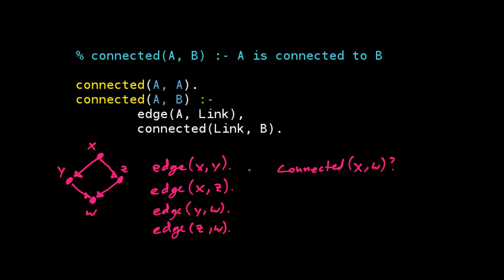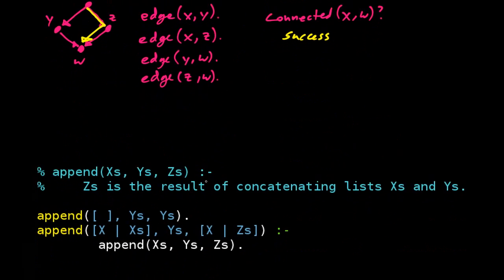Once we give this query, Prolog will look at this definition of connectedness we gave it, and it will try and derive connected X, W. And it will actually succeed. So there's a path here from X to W, and so it'll reply success. You can work out the details of how these rules connect and give you X to W. It's a nice little program. Let's look at a more complicated case now.